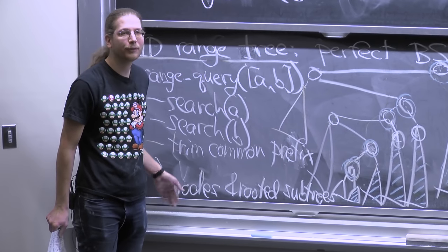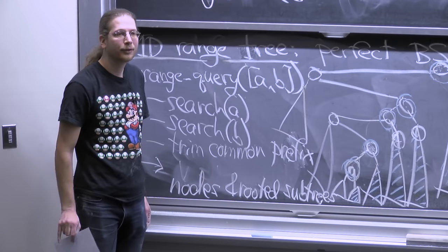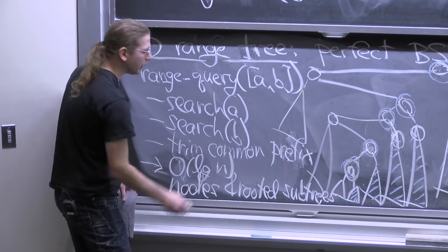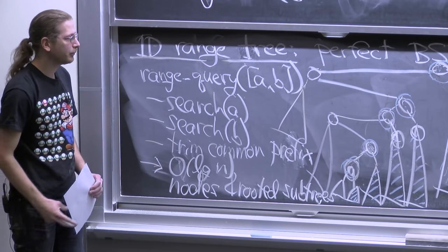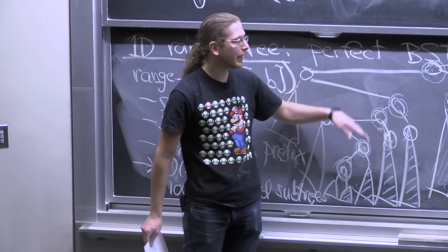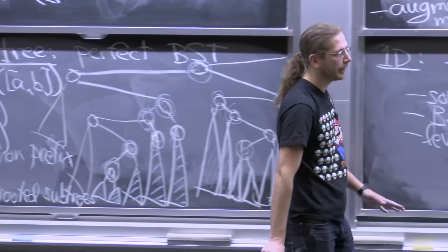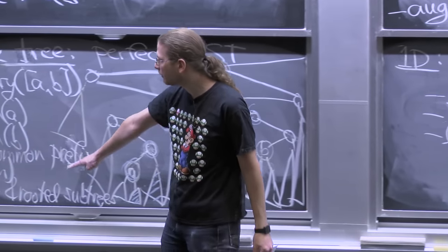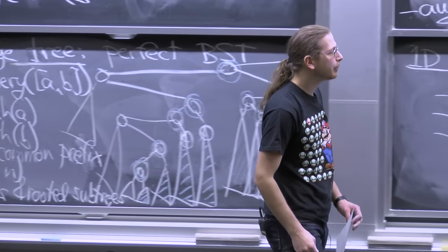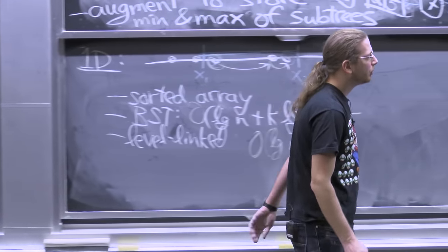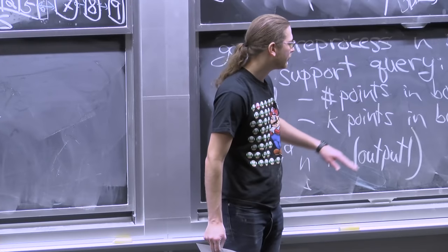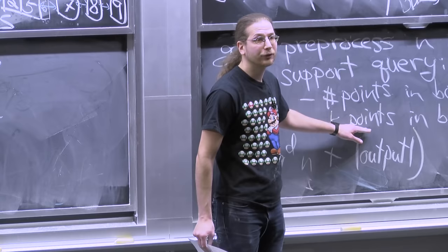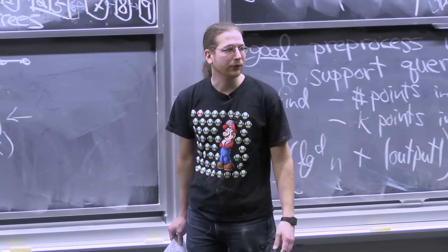This gives an implicit representation of the answer. To count the number of results, augment the tree with subtree sizes — then sum the sizes of all the returned subtrees plus the individual nodes, in O(log n) time. To list k points, do an in-order traversal of the returned subtrees, which takes O(k) additional time. So the total time is O(log n + k).